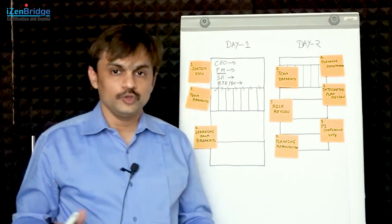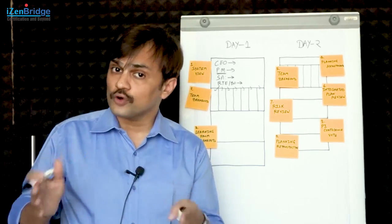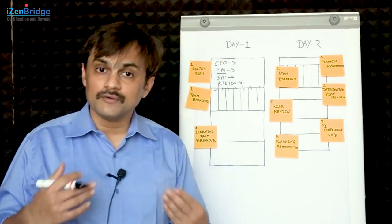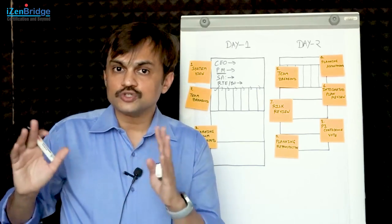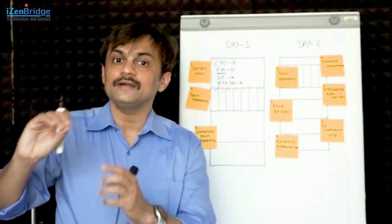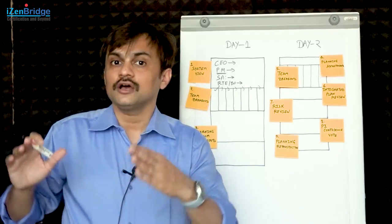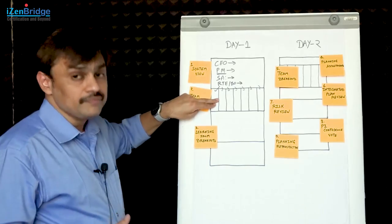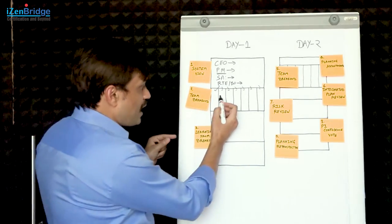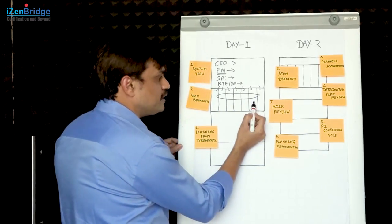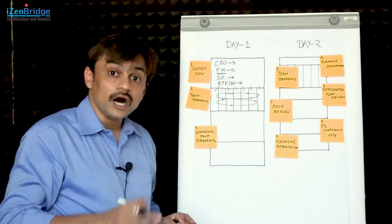As a team, we should be able to figure out that by doing these 4 iterations of development, which portion of the program backlog we will be able to finish, and how do we help management achieve what they want from this particular program increment duration. That is why we are doing this breakout session - we need to come up with our team's plan for the upcoming PI. This plan may have a lot of interdependencies, so while doing the breakout sessions, we end up doing various integrations of our plans by talking to different teams and understanding how they are taking a particular dependency.